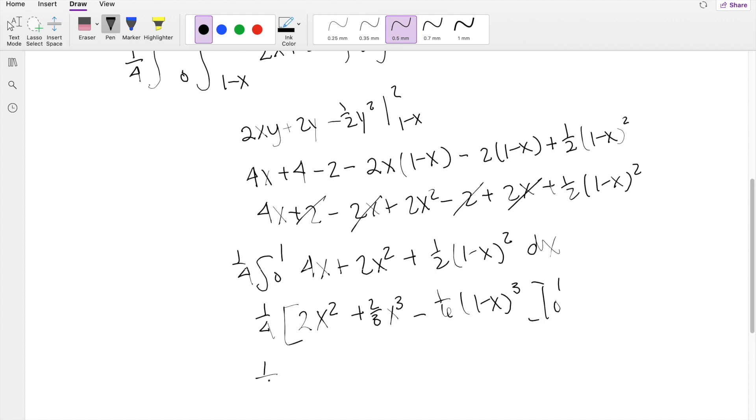Plugging in the upper limit, you're going to get 2 plus 2 thirds, minus 0, minus 0, minus 0, plus—when I plug in 0 here, you get 1 sixth.